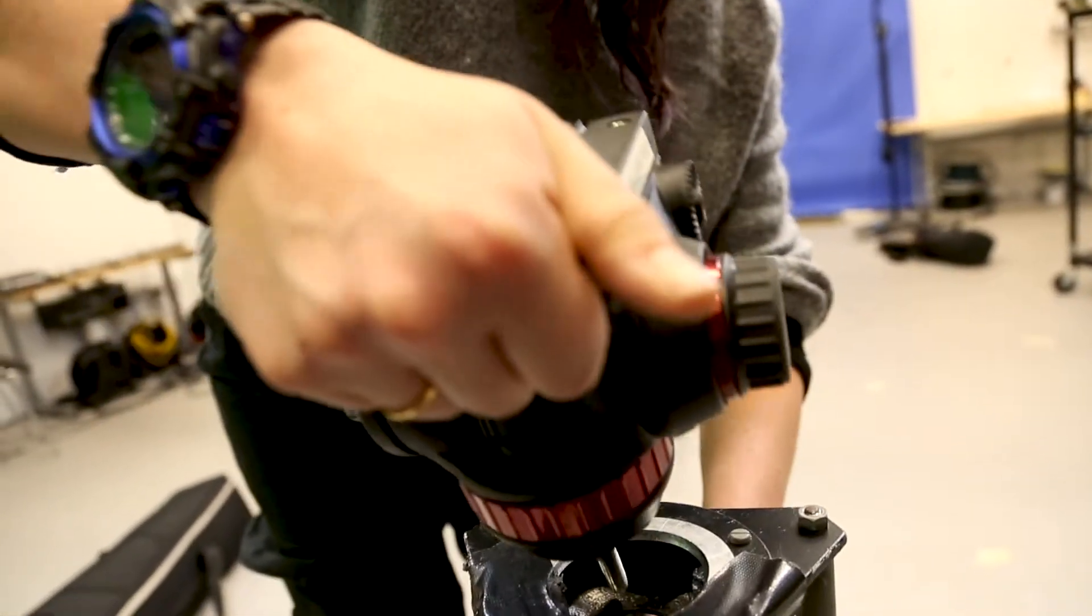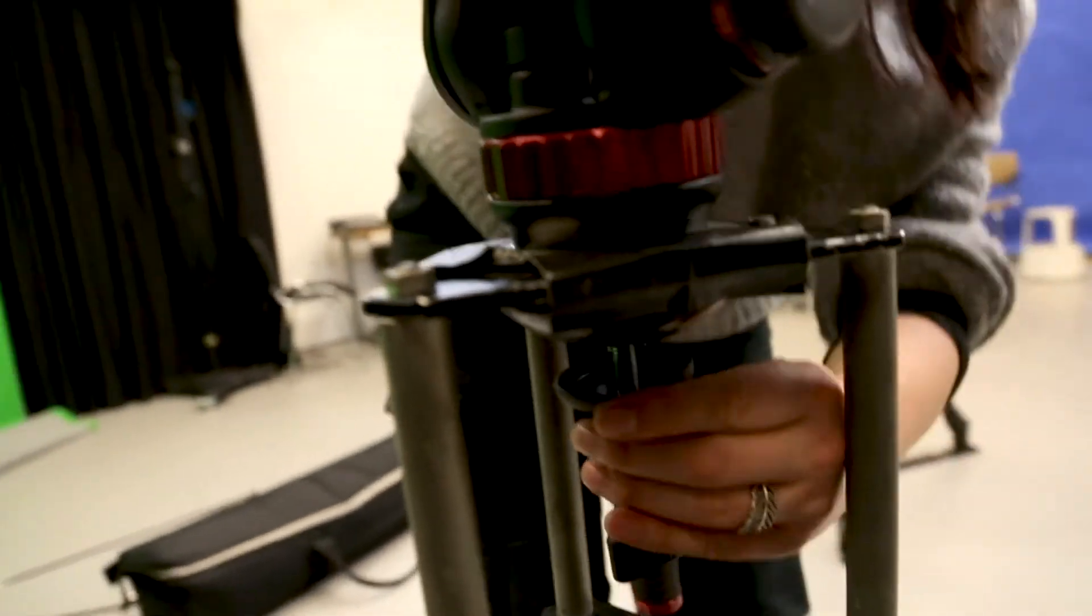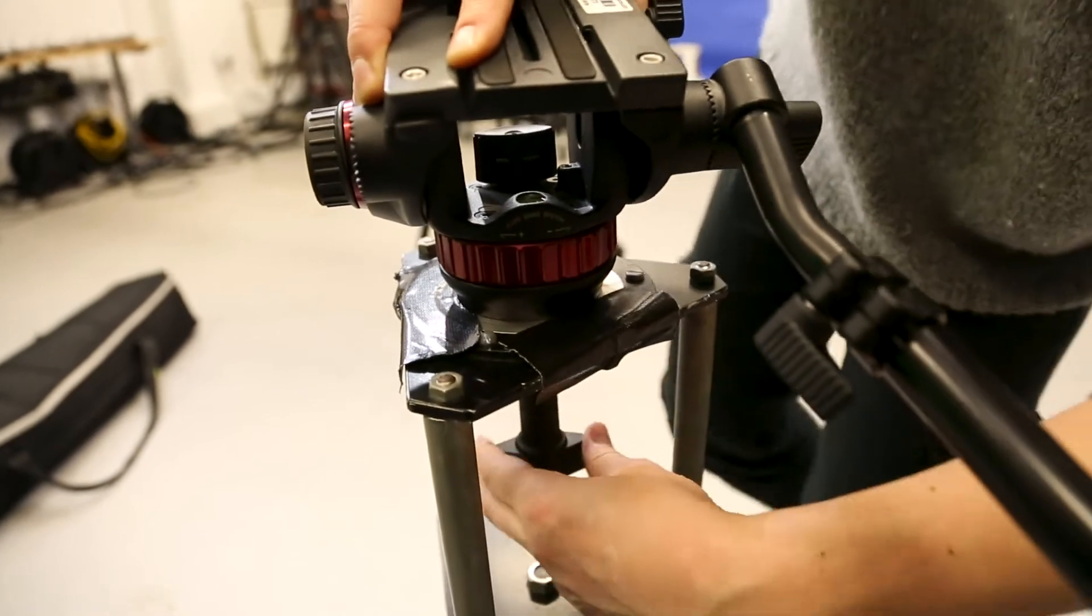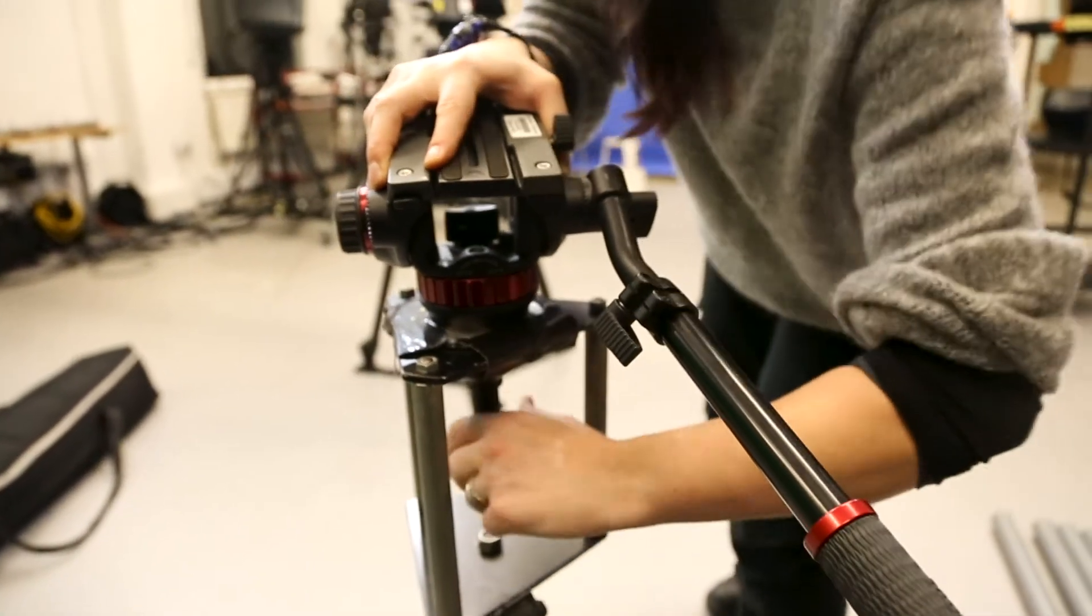Fit the tripod head into the camera bowl and use the hand wheel to tighten it in. Check the yellow spirit level bubble before putting the camera on, otherwise all your shots will be tilted to one side.